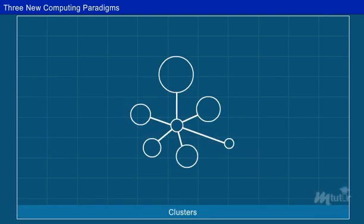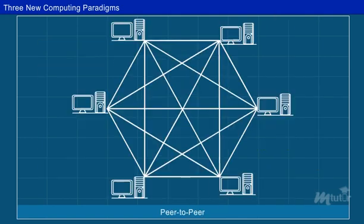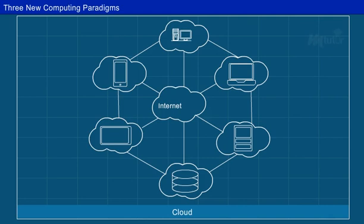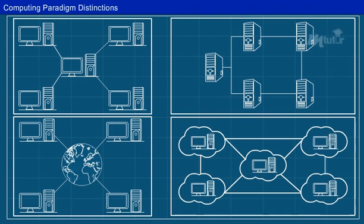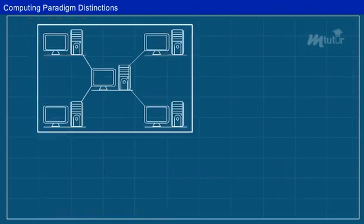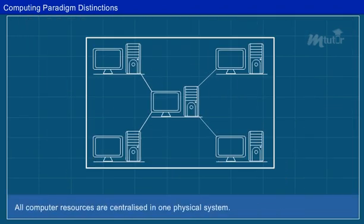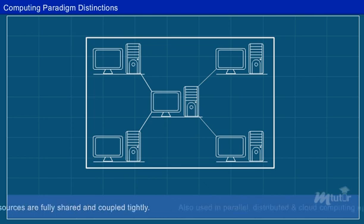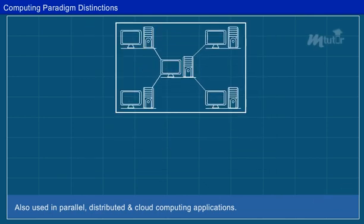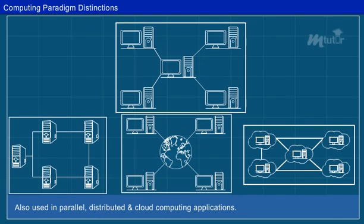In the future, the differences among clusters, grids, P2P systems and cloud may be blurred. Centralized computing: all computer resources are centralized in one physical system, fully shared and tightly coupled within one integrated OS. Even though many data centers and supercomputers are centralized systems, they are also used in parallel, distributed and cloud computing applications.